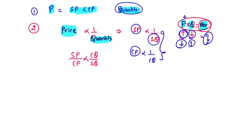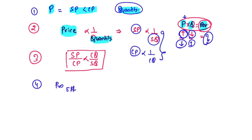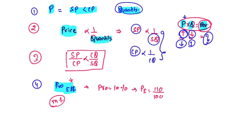I use the word 'profit effect.' Most mentors use the term 'multiplying factor' — both mean the same thing, but multiplying factor is a bigger word so I prefer 'effect.' If profit is 10%, the effect is 110/100, which is nothing but selling price upon cost price.